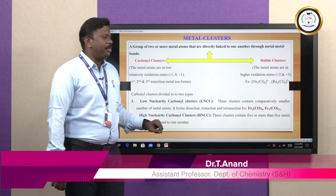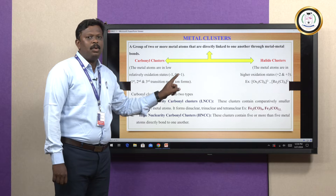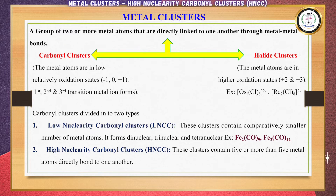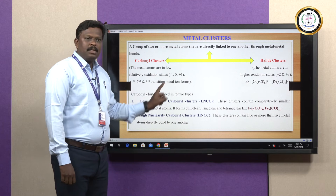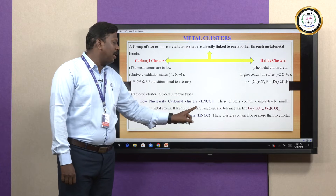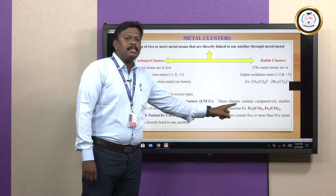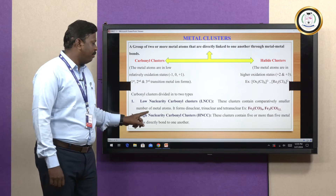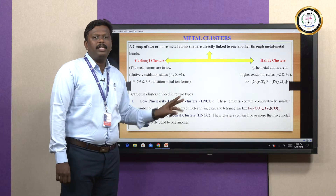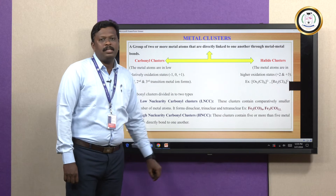In carbonyl clusters, the metal atoms are in the oxidation state of -1, 0, and +1. In general, first, second, and third transition metals form the carbonyl clusters. These carbonyl clusters are classified into two types: low-nuclearity carbonyl clusters (LNCC) and high-nuclearity carbonyl clusters (HNCC). In low-nuclearity carbonyl clusters, the clusters contain a comparatively small number of metal atoms, forming only dinuclear, trinuclear, and tetranuclear compounds. Examples are Fe2(CO)9 and Fe3(CO)12.